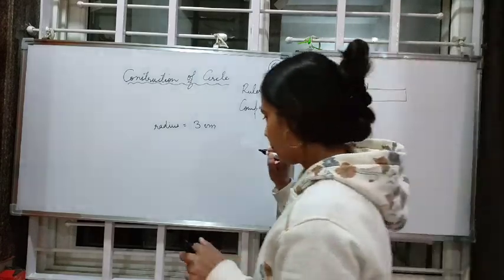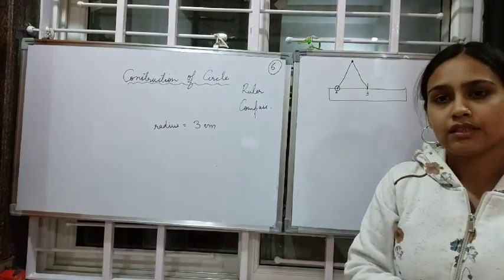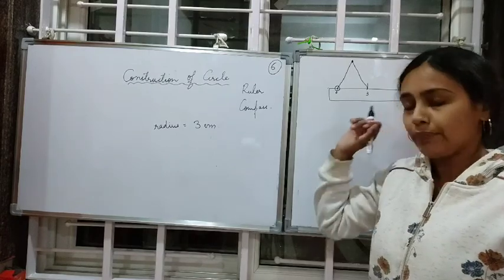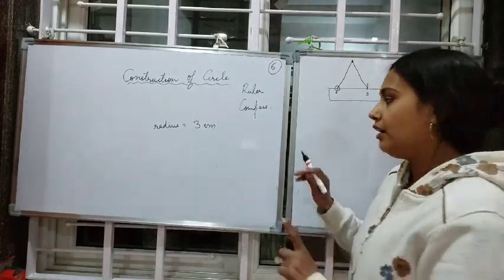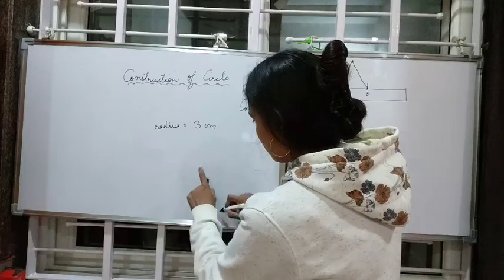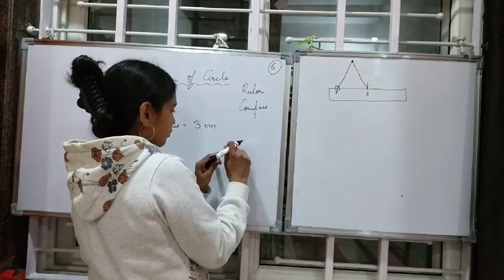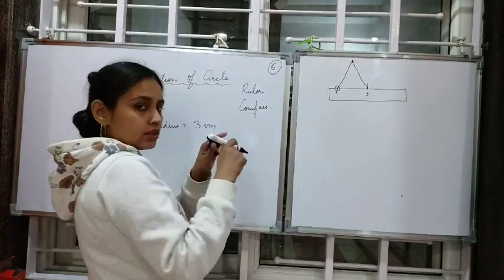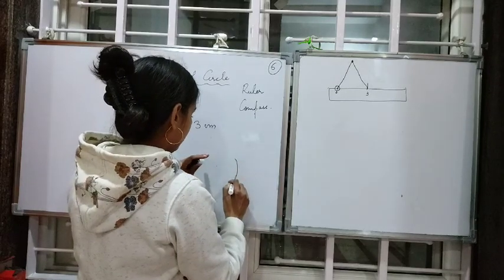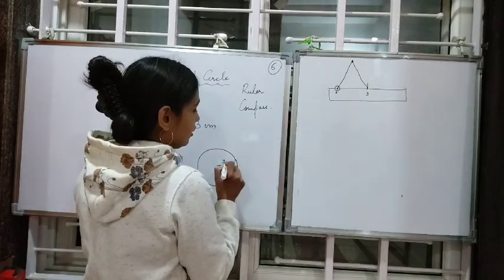Now mark a point on your page. Place the pointer of the compass on that point, and without disturbing the length of three centimeters, draw the circle. Hold the compass firmly and rotate it to draw your circle. This is a circle of radius three centimeters.